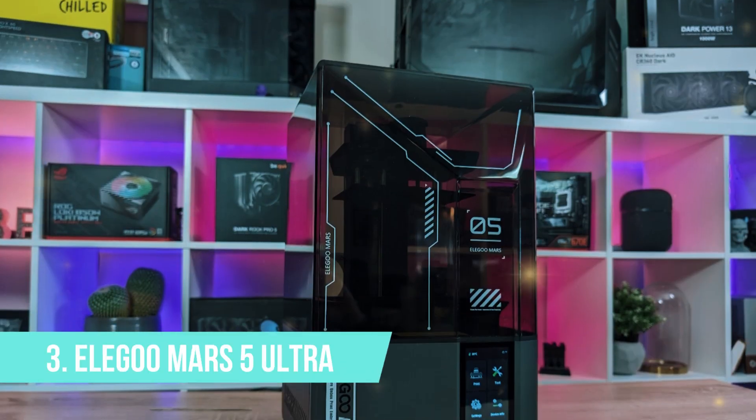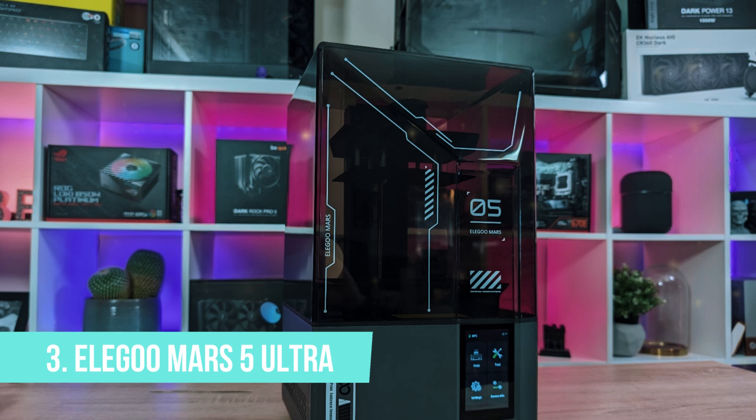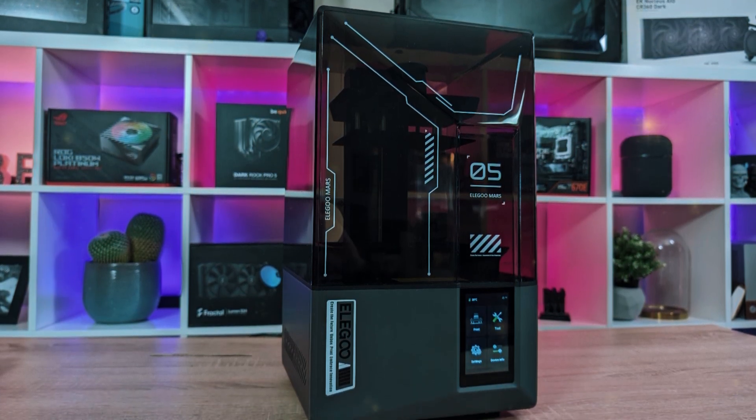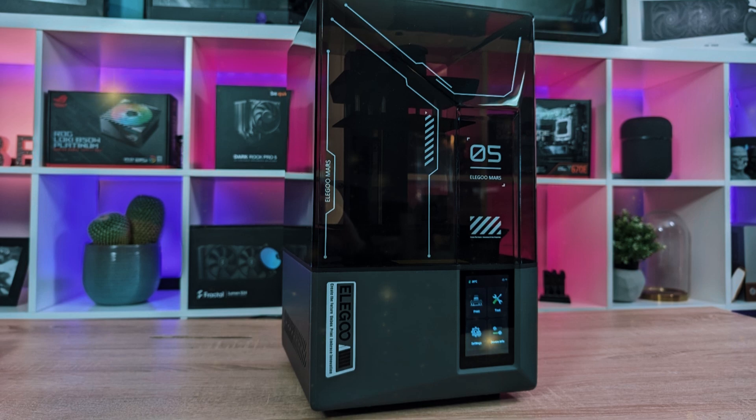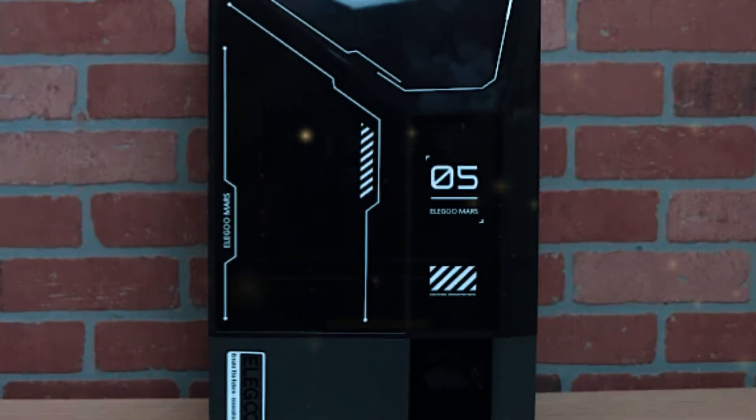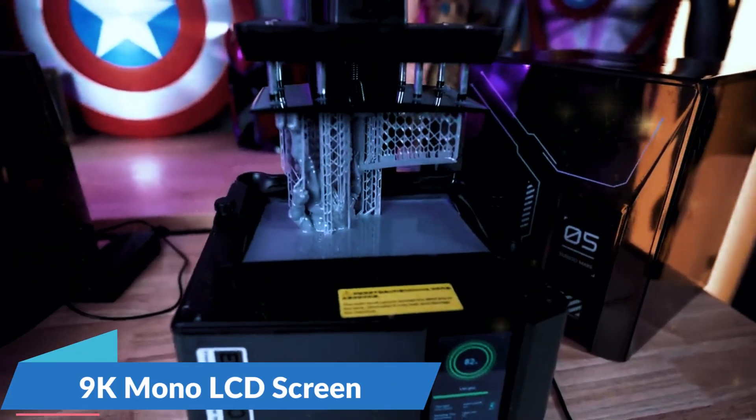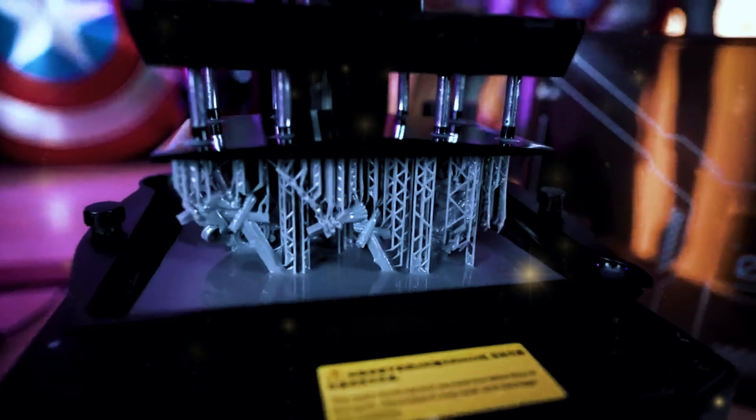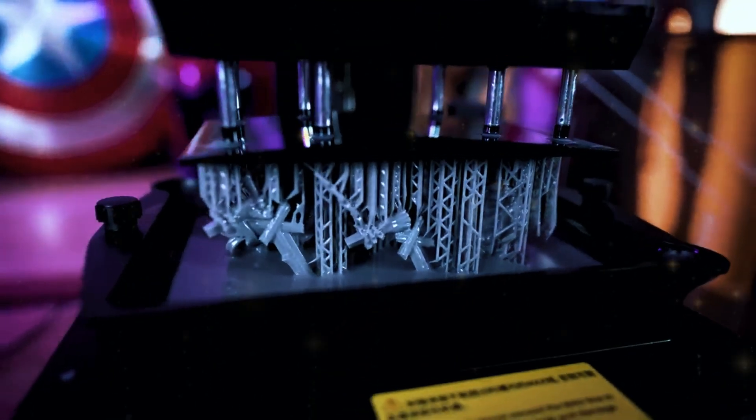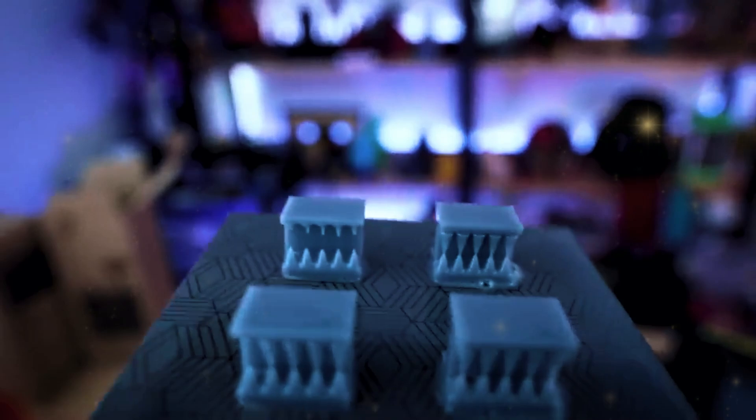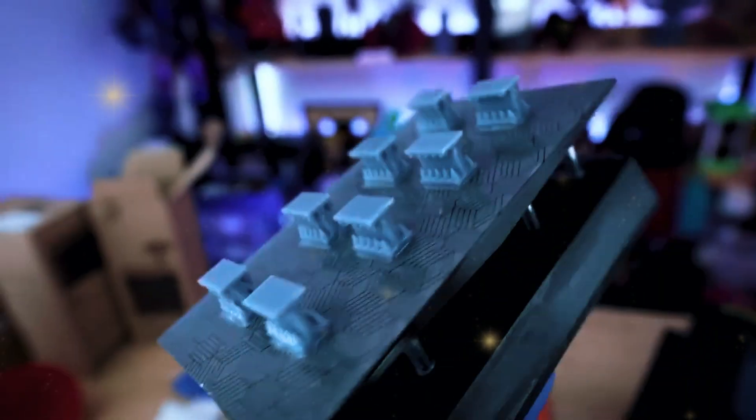Number 3: Elegoo Mars 5 Ultra. Now let's talk about the Elegoo Mars 5 Ultra, a resin printer that stands out for its incredible detail and precision. If you need a machine that produces high-resolution prints, this is the one to consider. It features a 9K mono LCD screen that provides 92 percent light uniformity, ensuring that every layer of your print is consistent and sharp. This makes the Mars 5 Ultra perfect for projects where detail is critical, like models or intricate parts.